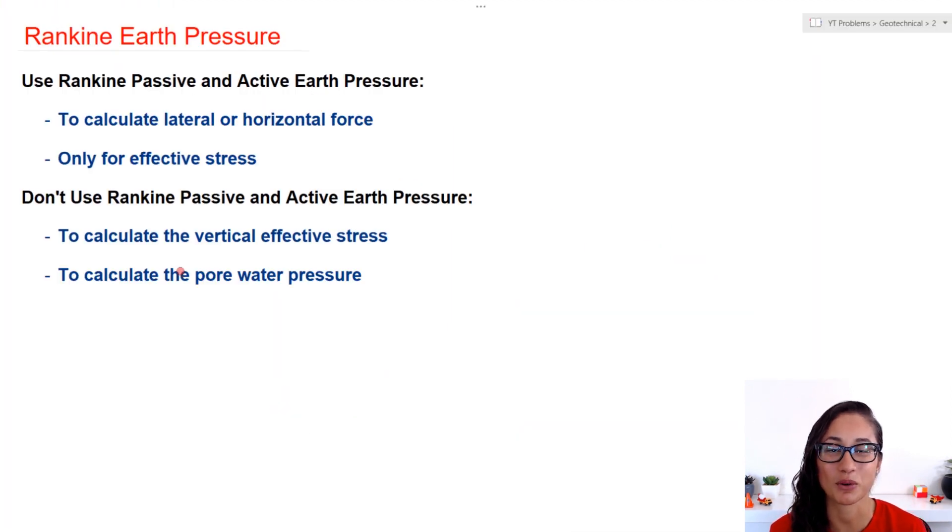So this is a summary of what we just talked about. Use Rankine earth pressure to calculate lateral horizontal force and only for the effective stress. And don't use Rankine earth pressure if you have to calculate the vertical effective stress and don't ever multiply it for the pore water pressure.